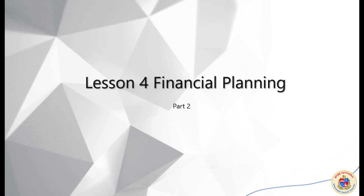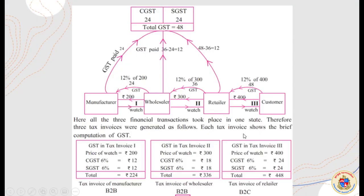This is part two of the video. If you have not seen the first video, please see it using the link given in the description. In the last video, we came across the concept of GST, and from the textbook image we understood how GST works from the manufacturer to the customer. This picture tells us the story of a watch which the manufacturer made at a cost of rupees 200.